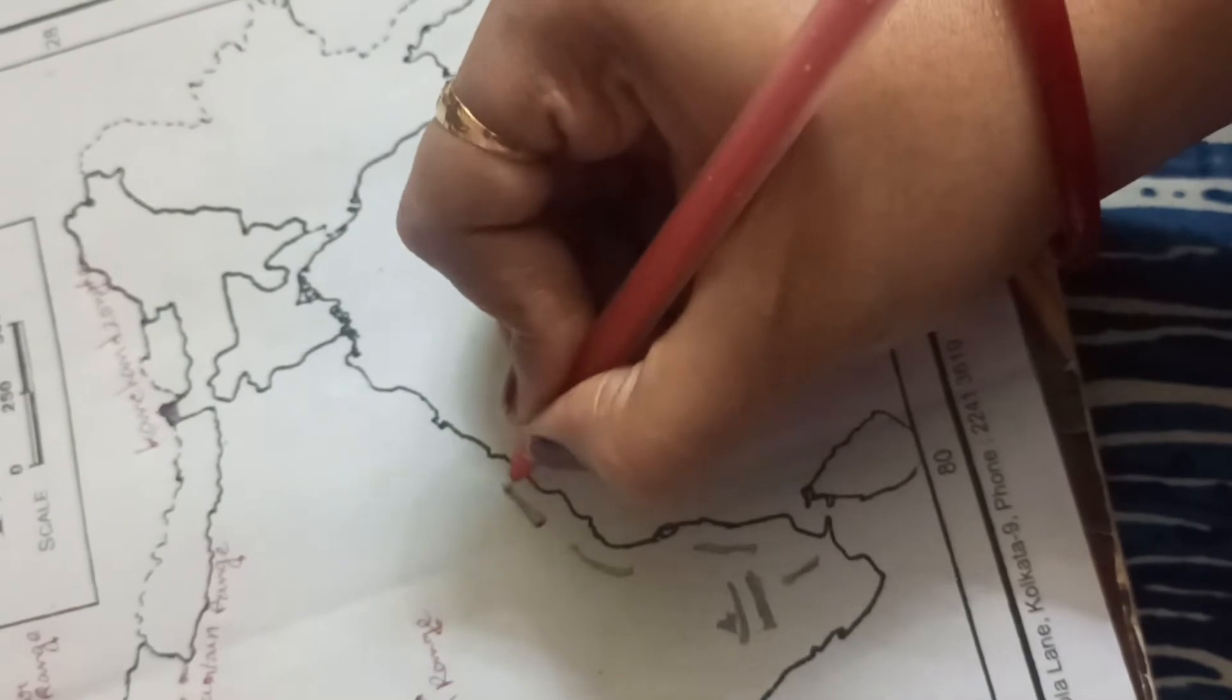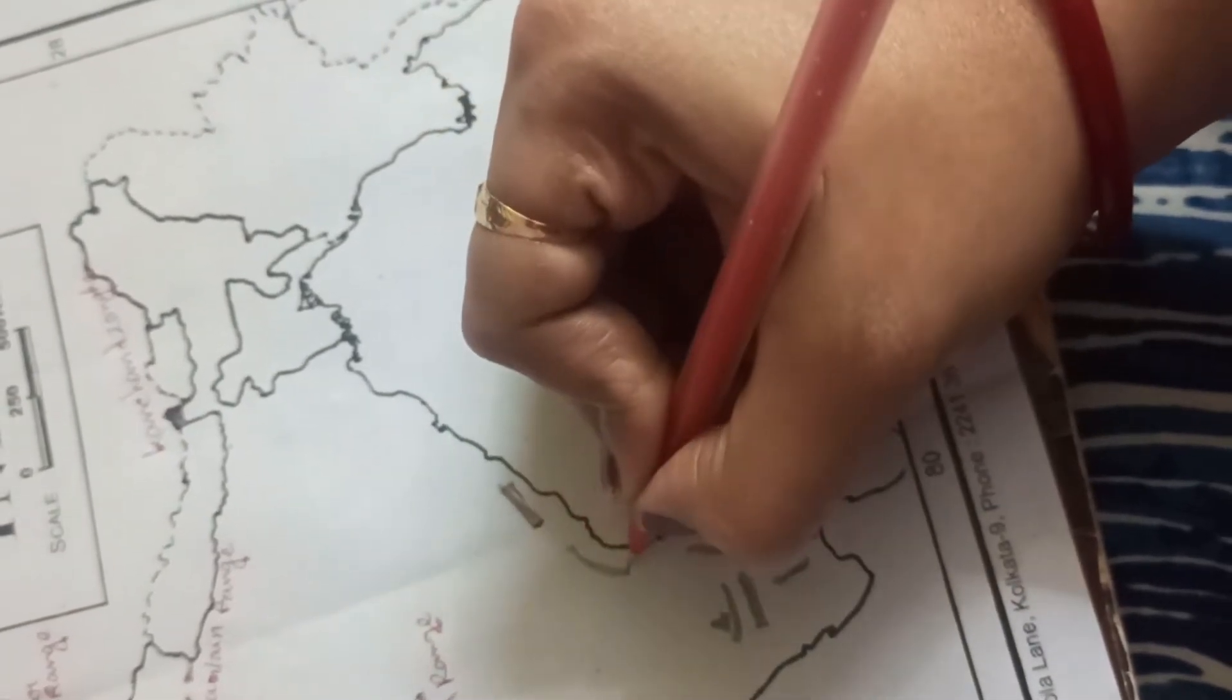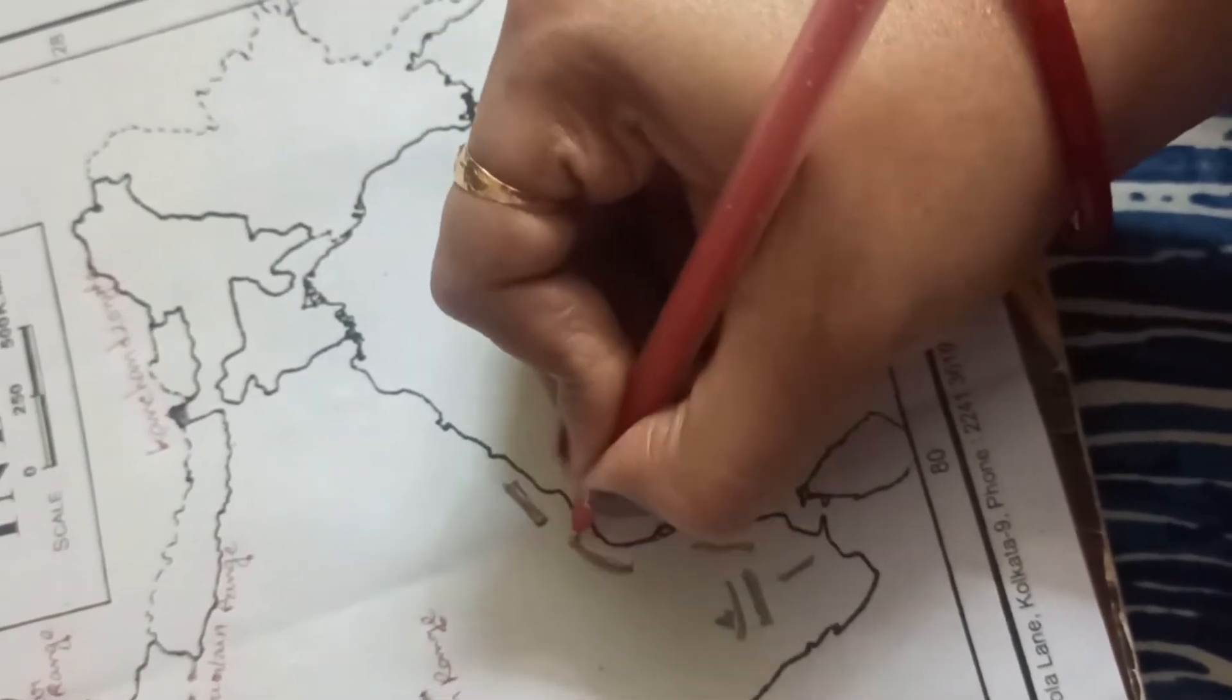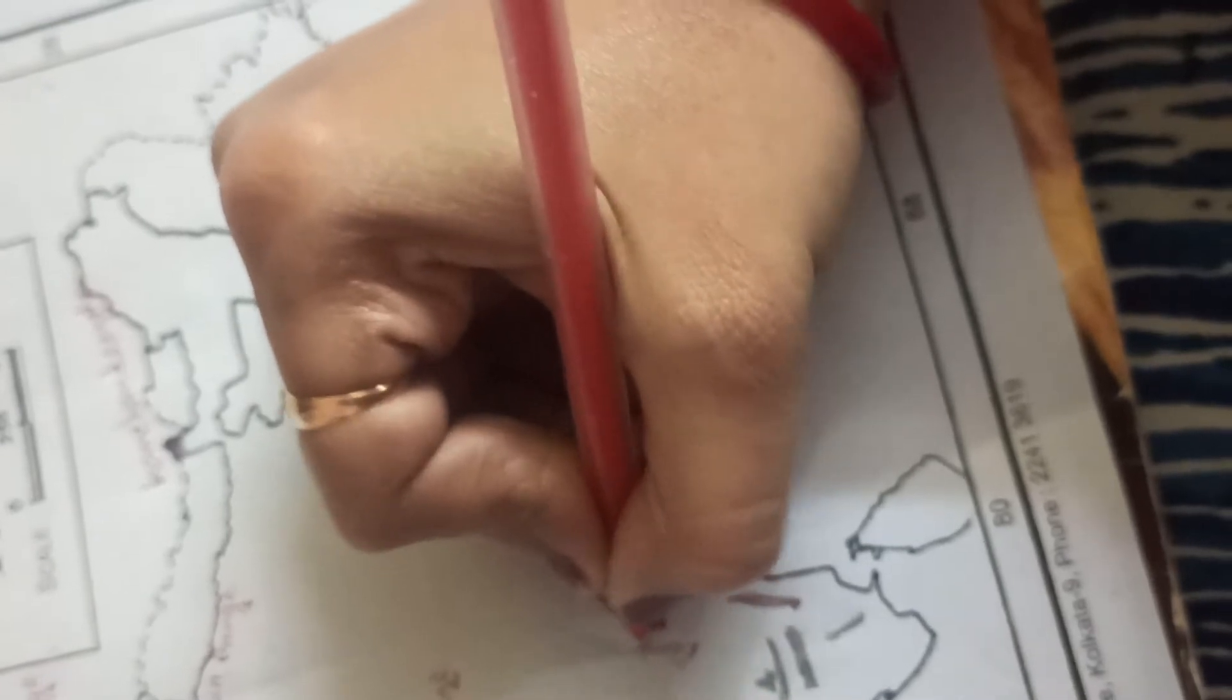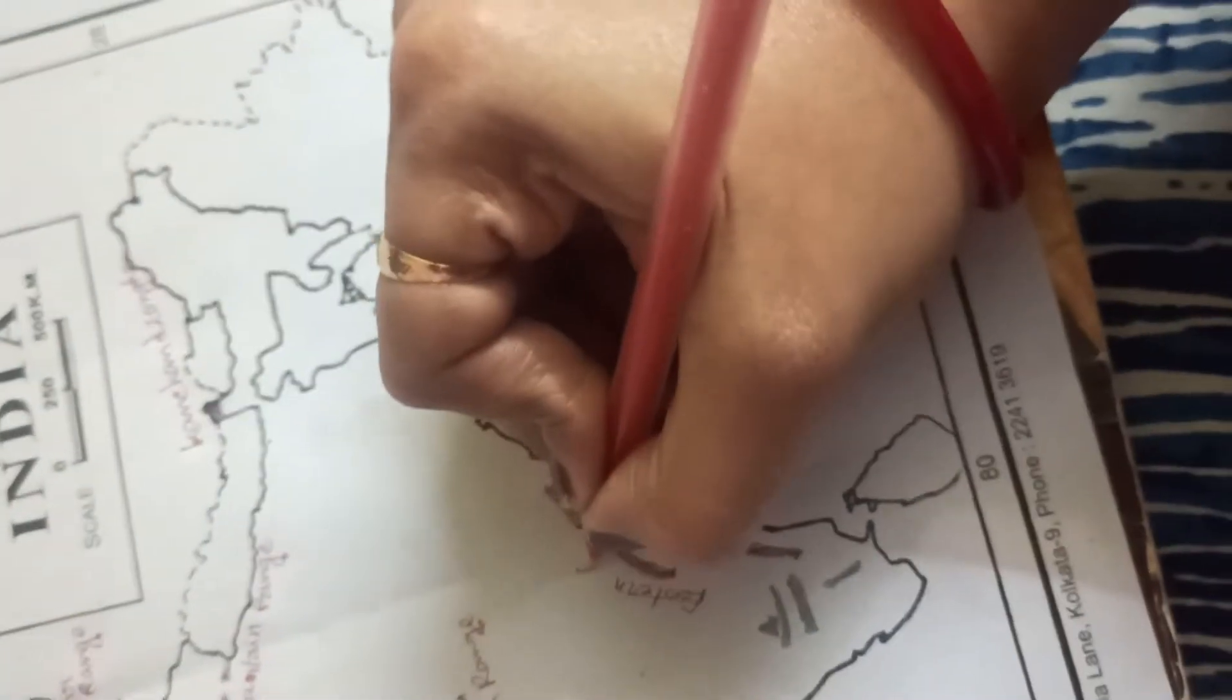Now this one, you can see the lake. This one is Eastern Ghat. Eastern Ghat. Okay. This one is Eastern Ghat mountain range.